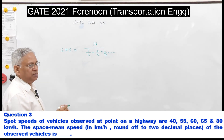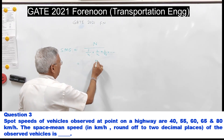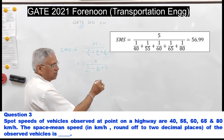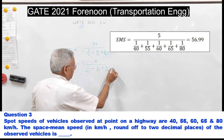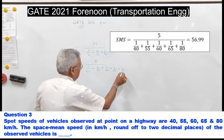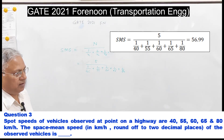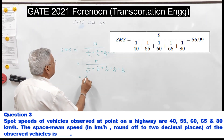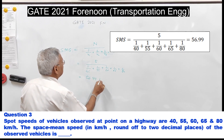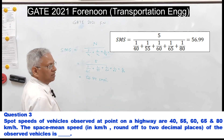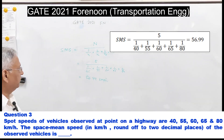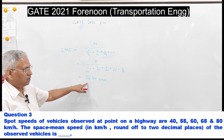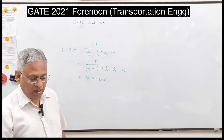Space mean speed = 5 / (1/40 + 1/55 + 1/60 + 1/65 + 1/80). Solving this gives 56.99 km/h. Since the answer is to be given to two decimal places, we keep 56.99 km/h and do not round to 57.